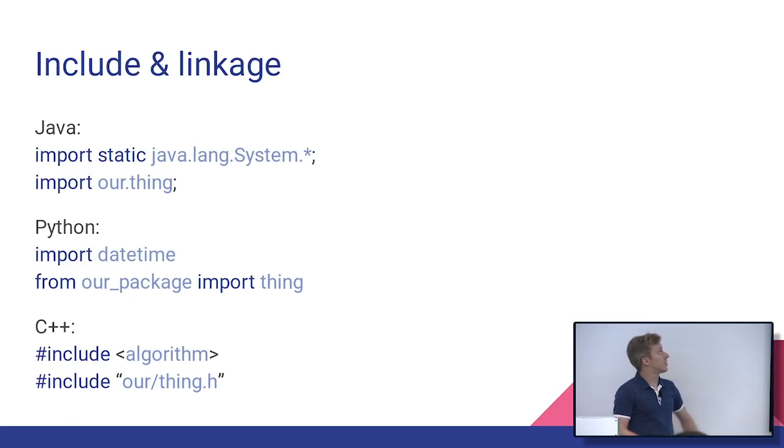OK. Include and linkage. So Java, Python, you're kind of used to these import things. And the idea is some other file has it. Let's go fetch it from that other file. It's the same concept in C++. You'll notice I kind of did pairs here. So the top one is sort of like getting a system library sort of thing.